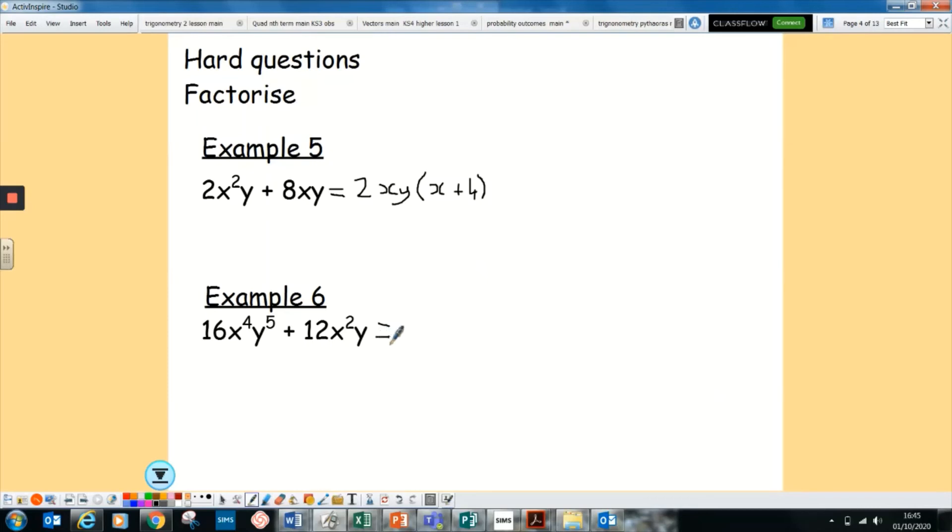Again, example 6, it looks more difficult, but you do it exactly the same method. Look at your numbers, what's common. Again, the biggest number that's common is 4. You've got x to the power of 4 and x². So pick the highest power that goes into both. So x² is the highest one that fits into both. And then look at your y, power of 5 and a y. So you can just take a y out there.